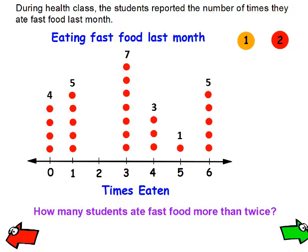Let's try to answer some questions. During a health class, the students reported the number of times they ate fast food last month. There were 4 students that never ate fast food. There were 5 students that ate out one time. Consider each one of these dots a person — 7 of these students ate fast food 3 times last month.